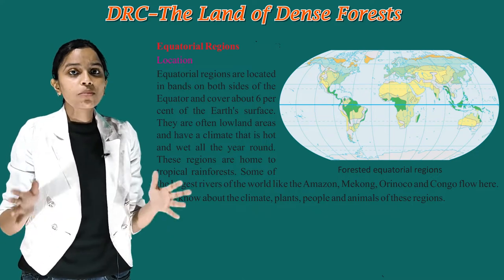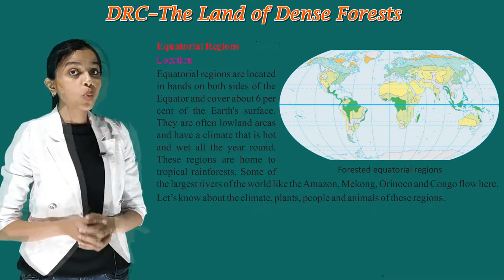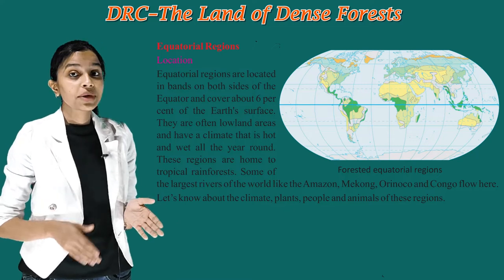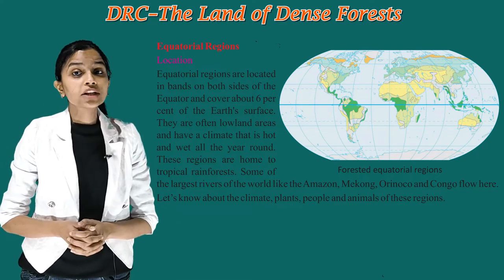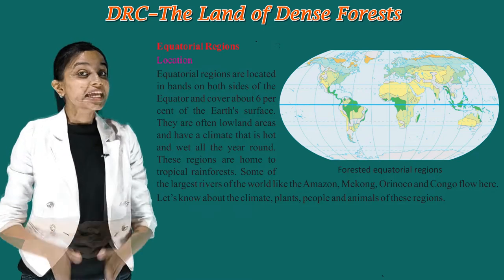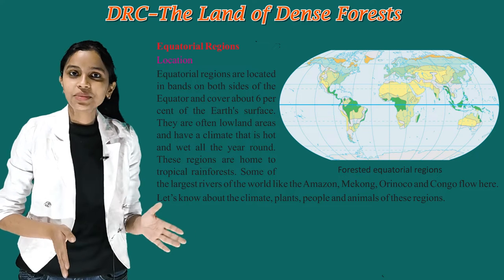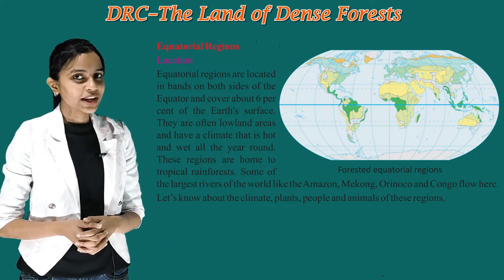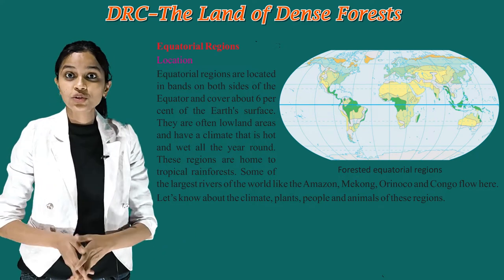Some of the largest rivers of the world, like the Amazon, Mekong, Orinoco and Congo, flow here. Let's know about the climate, plants, people and animals of these regions.